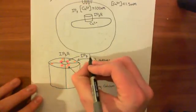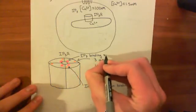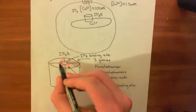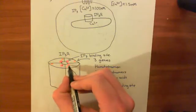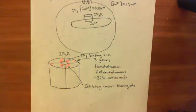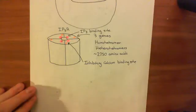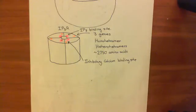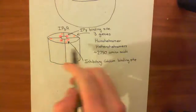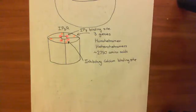When IP3 goes up in the vicinity of these IP3 receptors, an IP3 molecule is going to bind to each one of these four subunits — one IP3 molecule here, one here, one there, and so on. So four IP3 molecules bind overall to the IP3 receptor because you have four subunits. When IP3 binds to the IP3 binding site, it changes the conformation of that IP3 receptor subunit so that the inhibitory calcium binding site is removed — it's no longer exposed to the cytoplasm.